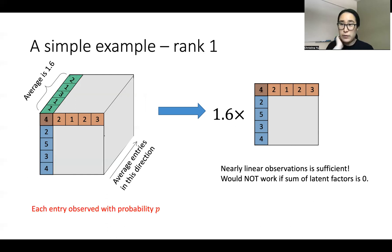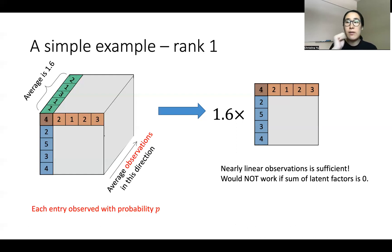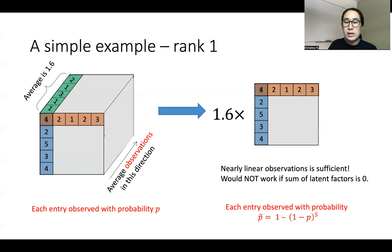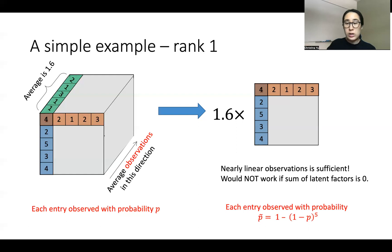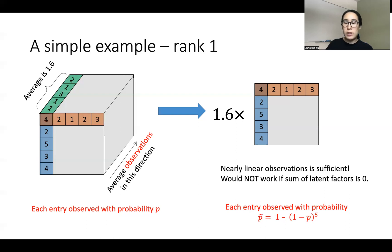Of course, in reality we observe each entry of the tensor with only probability p, so we have a sparse tensor. If we average the observations along the third mode, we're averaging only the entries that were actually sampled. What we get is that the corresponding matrix will have a non-zero entry with probability p-tilde, where p-tilde equals 1 minus (1 minus p) to the n — the probability that at least one entry along the third mode is observed.